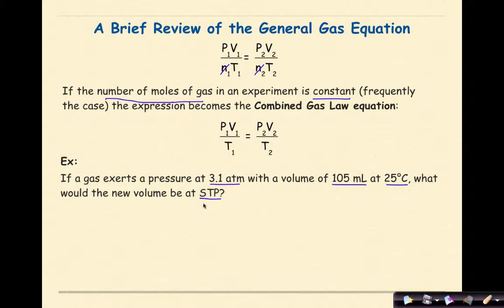So if I was going to start this, I would say my pressure is 3.1 atmospheres. My volume is 105 milliliters, and I could keep it as that as long as I'm fine with the fact that my answer should also be in milliliters. My temperature equals 25 degrees Celsius, and we have to add 273 to that. When we do that, we find that it is going to be 298 K. And these are all my initial values. So this is P1, V1, and T1.